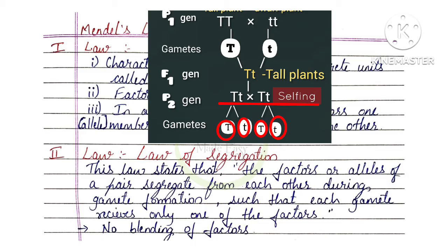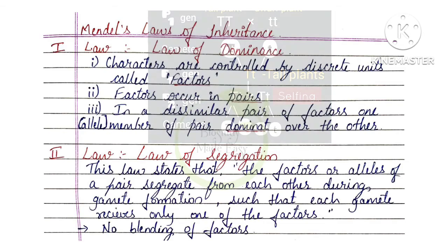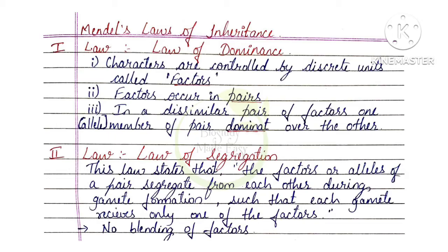This is nothing but the Law of Segregation. In the monohybrid cross, alleles separate — this is the Law of Segregation.